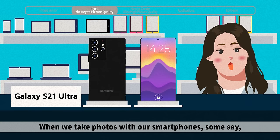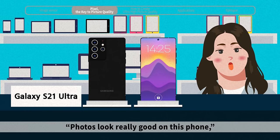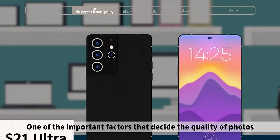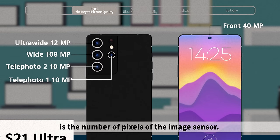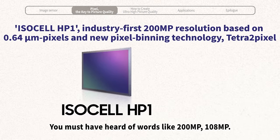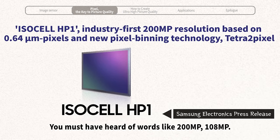When we take photos with our smartphones, some say photos look really good on this phone, or photos aren't that great on that phone. One of the important factors that decide the quality of photos is the number of pixels of the image sensor. You must have heard of words like 200 megapixels or 108 megapixels.